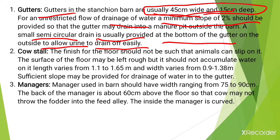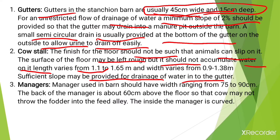The next component is the cow stall. The finish for the floor should not be such that animals can slip on it. The surface may be left rough but it should not accumulate water. Its length varies from 1.2 to 1.65 meters and width varies from 0.9 to 1.38 meters. Sufficient slope should be provided for drainage of water into the gutter.